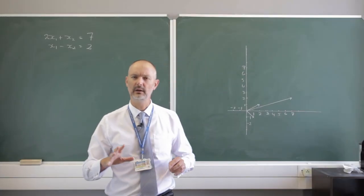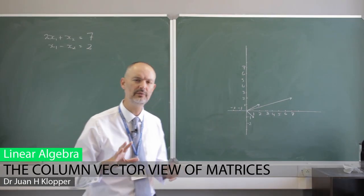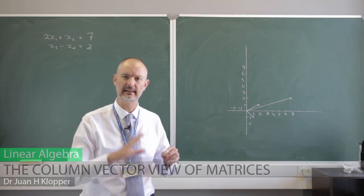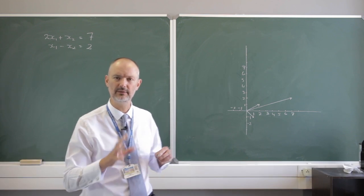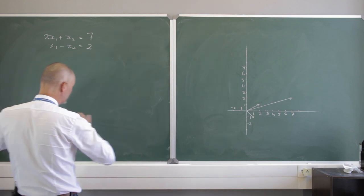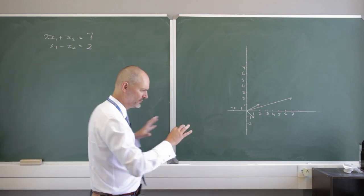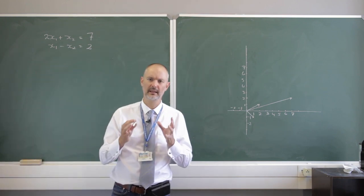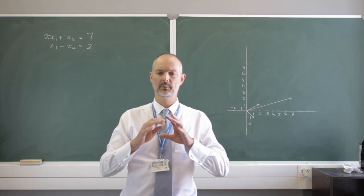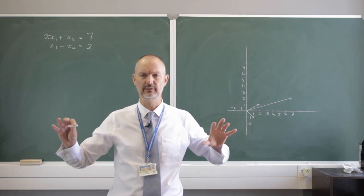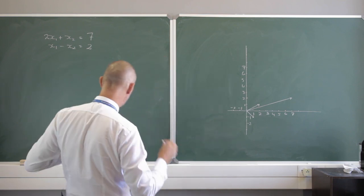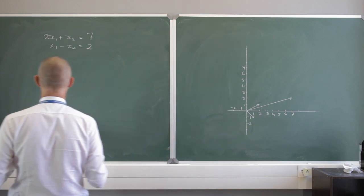So yesterday I showed you very briefly this column view. I didn't really mention the word 'column view' but there's a way not to see matrices as rows but as columns. There are really two views on matrices. We have row operations, which is just seeing things as rows, but much more interesting is the column view.